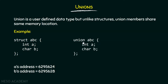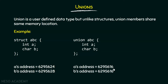But if I define a union — which is declared the same way as a structure, with the difference that the keyword union is used instead of struct — and check the addresses of a and b, they are both the same: 6295616 for both a and b. This means that a and b are sharing the same memory location. This is the difference between structure and union: union members share the same memory location while structure members have different memory locations.